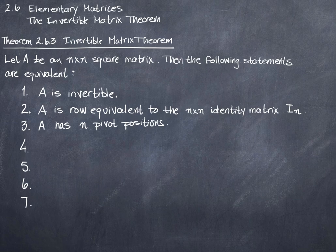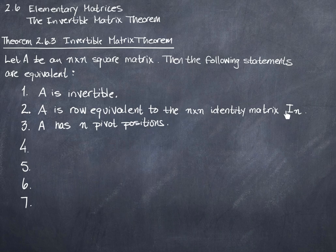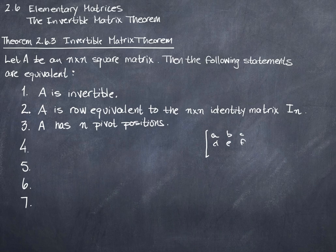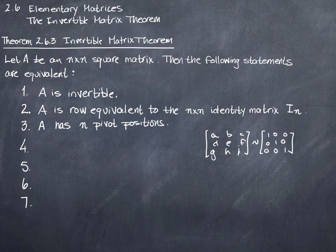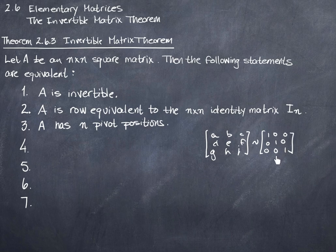The third statement is that A has n pivot positions. If A has n pivot positions and A is an n by n square matrix, then it can be reduced to the identity matrix. So if I can count n pivot positions, I can automatically assume it can be reduced to the identity. By this theorem, if I know A has n pivot positions, I don't need to do additional work — I can assume it can be reduced to the identity matrix.